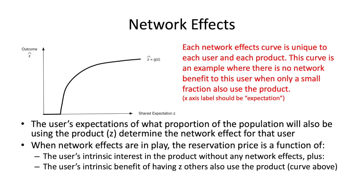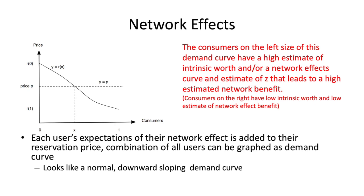When network effects are in play, we take this curve of the user's network effects and factor it into the analysis. When network effects are factored in, you still get a normal downward sloping demand curve. At a given proportion of the population — say everyone's assuming 70% will buy this product — people with very high reserve prices have a very high extra benefit from the extra users. As we get down to lower-end consumers, those have a fairly low intrinsic benefit, plus whatever network effect applies.